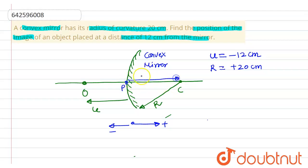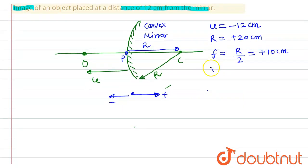So the radius of curvature is right from the pole, and as we know that focal length is r upon 2, that means it will be plus 10 centimeters also. And we have to find v.